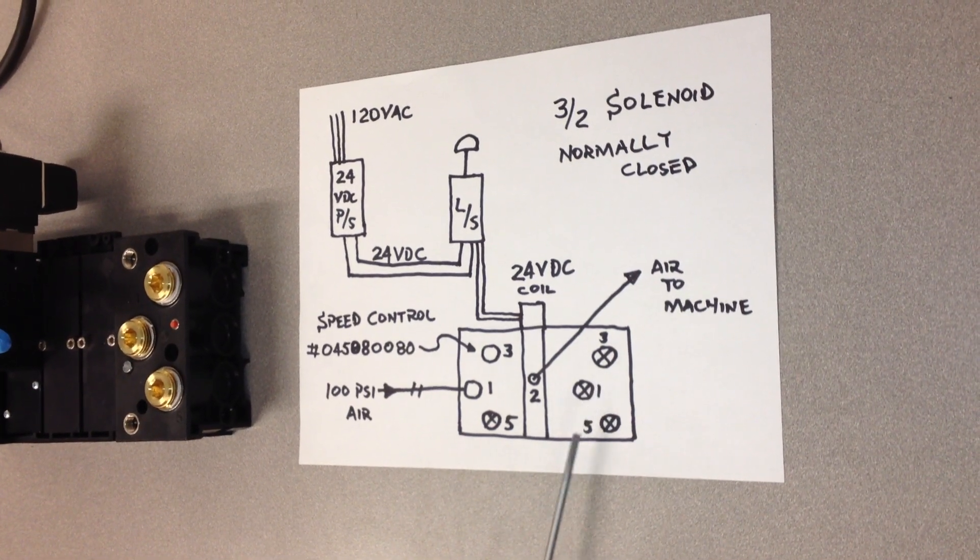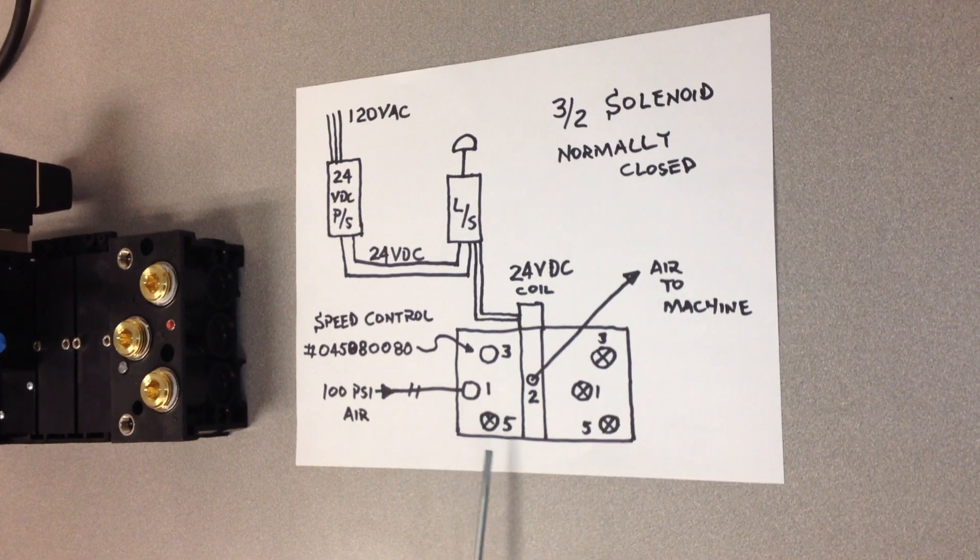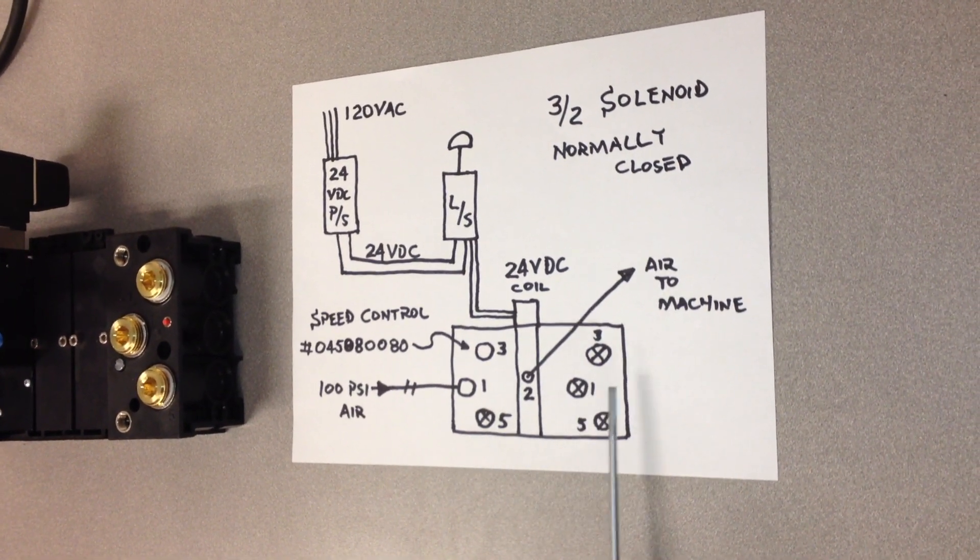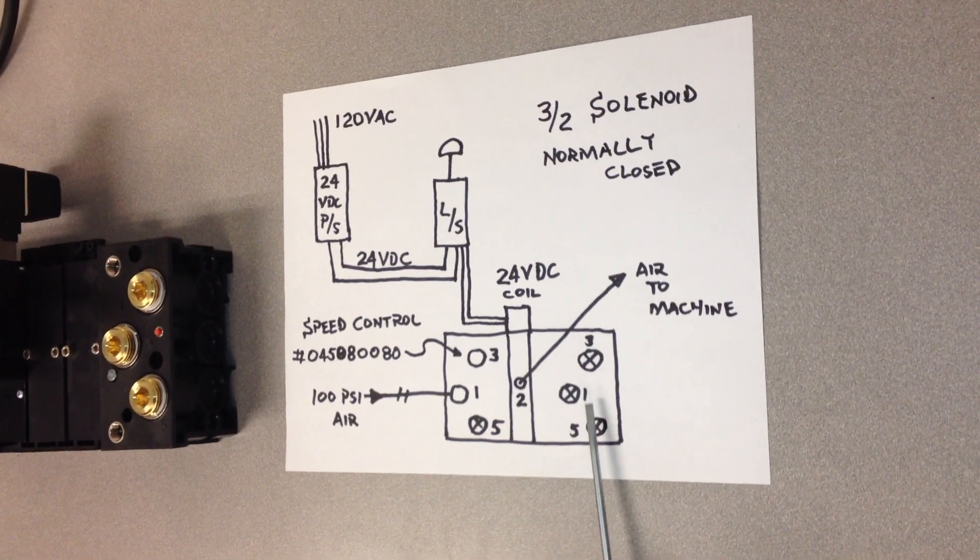The solenoid is mounted on a manifold, and there are a number of ports that are hard to see, so we made a little drawing here. On the right-hand side of the manifold are ports three, one, and five, and we have those ports plugged up.